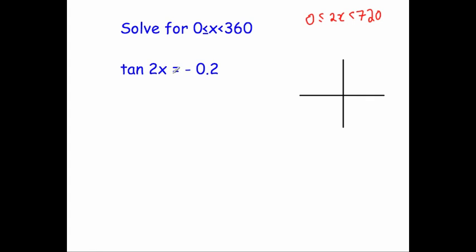Next, because it's tan 2x equals negative 0.2, let's find the acute angle. We do the inverse tan of 0.2. When you do shift tan of 0.2, you get 11.3 degrees to one decimal place.